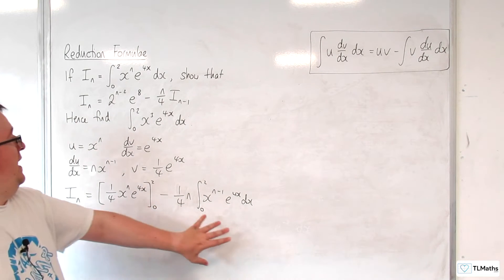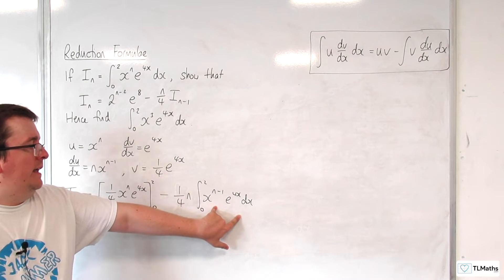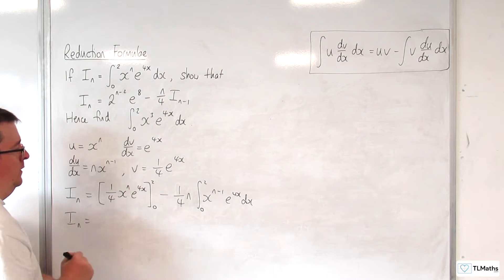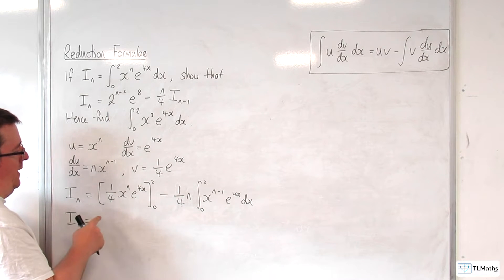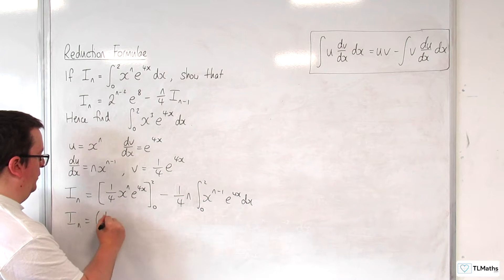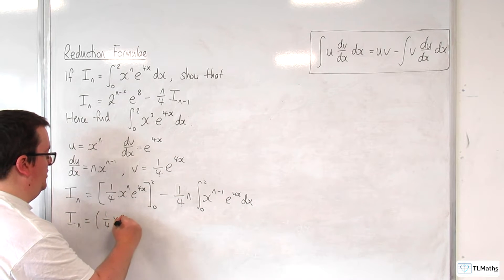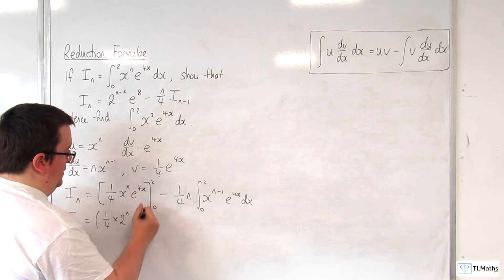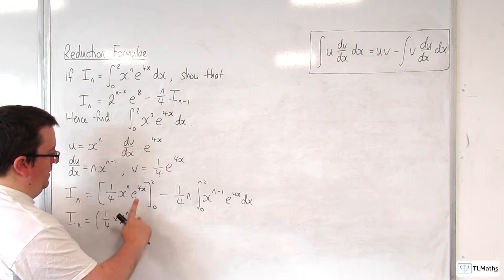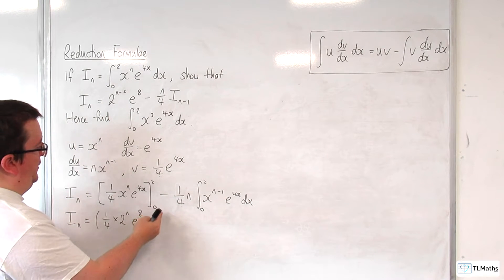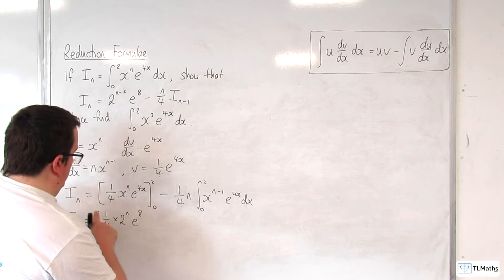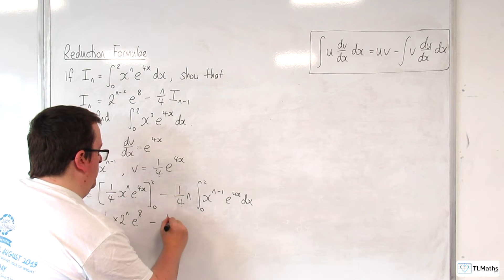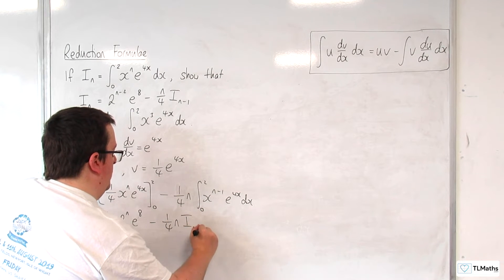This integral here is I_(n minus 1), so we can immediately use that. Substituting in the 2, we're going to have 1 quarter times 2 to the n times e to the 8. Substituting in 0, we get 0, so it's just that term. Take away 1 quarter n times I_(n minus 1).